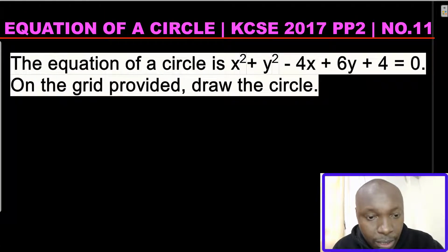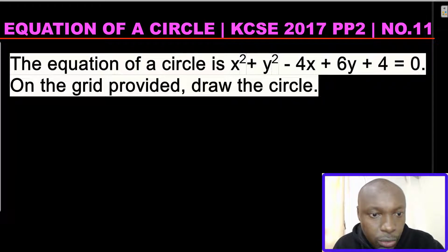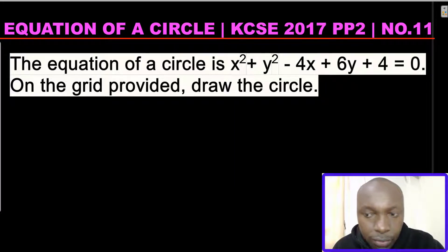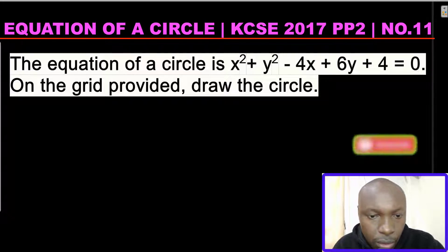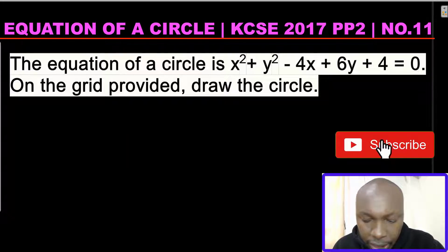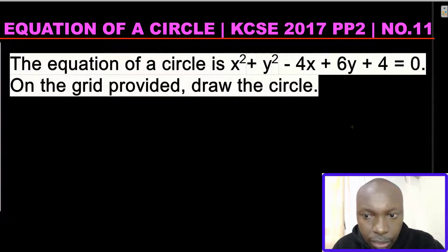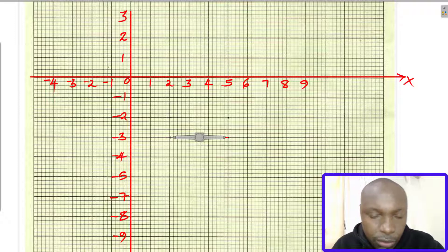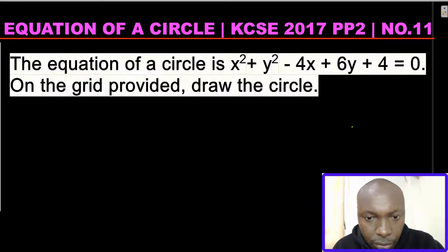Hello everyone, welcome to the lesson. In this lesson we'll solve a question on the equation of a circle. The question is: the equation of a circle is x squared plus y squared minus 4x plus 6y plus 4 equals 0. On the grid provided, draw the circle. So let me go to the grid — the x-axis and y-axis values are already given.